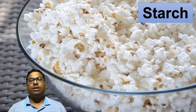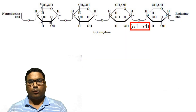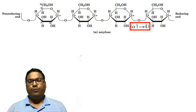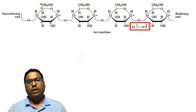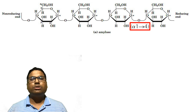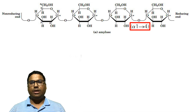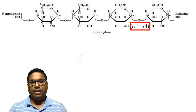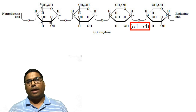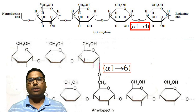Starch is made up of two important polymers. One is amylose, which is a linear chain of glucose units bound together with the alpha 1,4 glycosidic bond.